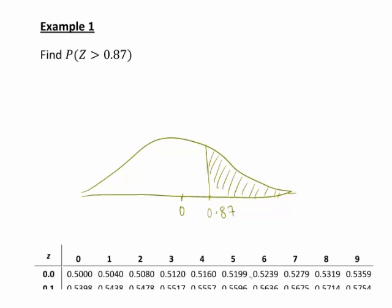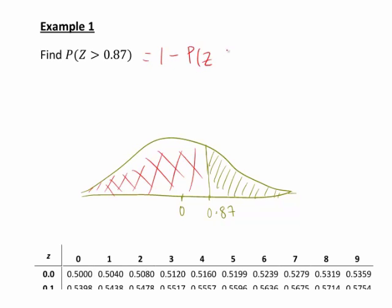Our standard normal table gives us the area to the left. The table gives us that area shaded in red. The total area under the standard normal density curve is 1, so our required area to the right of 0.87 is 1 minus the area to the left from the table. In other words, the probability of z being greater than 0.87 is 1 minus the probability that z is less than or equal to 0.87.